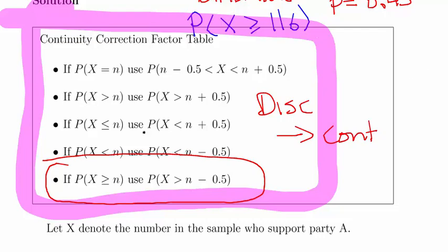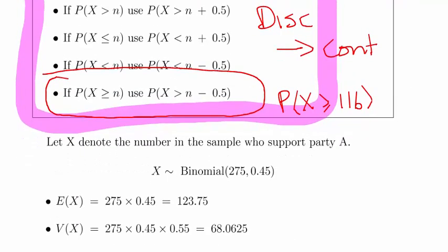In this instance what we have is probability of X greater than or equal to 116. So the probability of X greater than or equal to 116, when we're talking about the binomial distribution, essentially that becomes the probability of X being greater than or equal to 115.5 when we look at it from the point of view of a normal distribution.